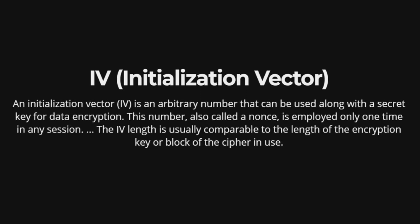Initialization Vector (IV): An initialization vector is an arbitrary number that can be used along with a secret key for data encryption. This number, also called a nonce, is employed only one time in any session. The IV length is usually comparable to the length of the encryption key or block of the cipher in use.